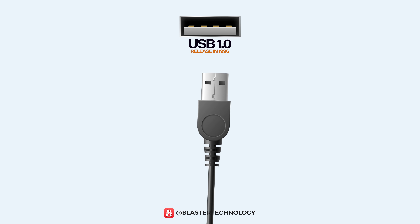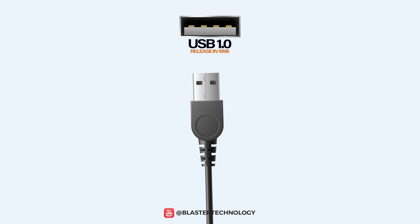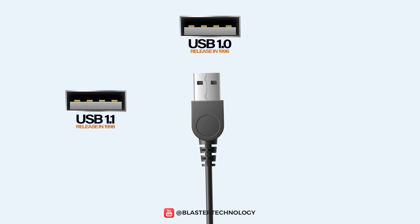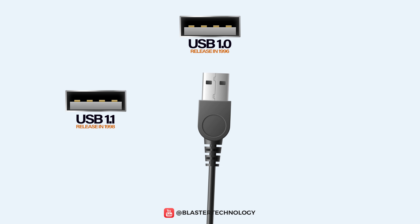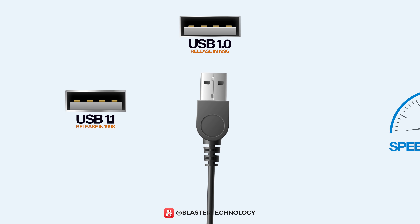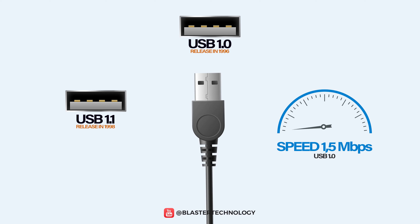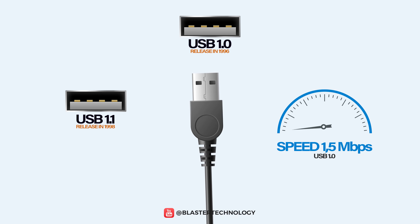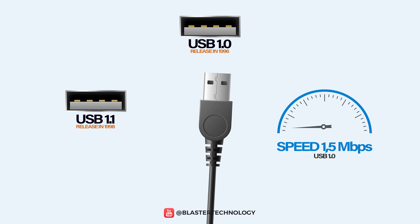USB 1.0 appeared in 1996 and was a prototype for USB 1.1, released in 1998. It was capable of transferring data at speeds of up to 1.5 megabits per second.